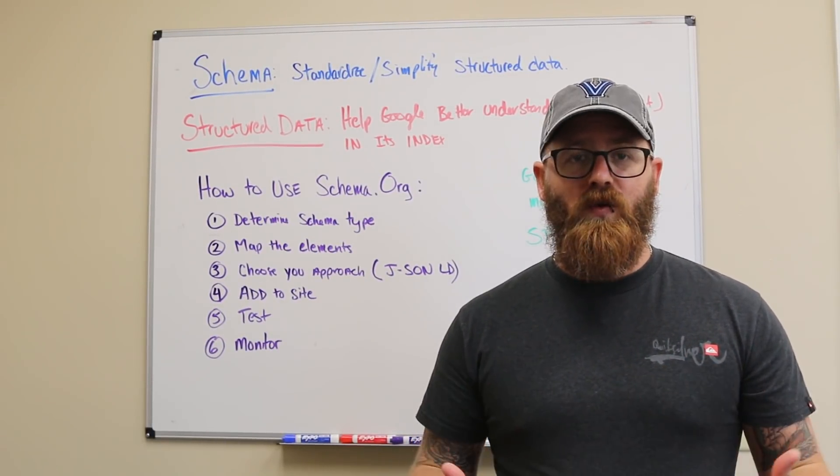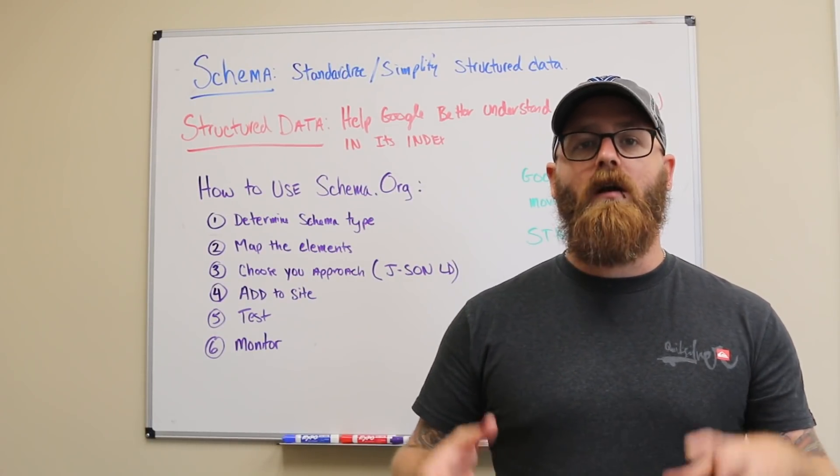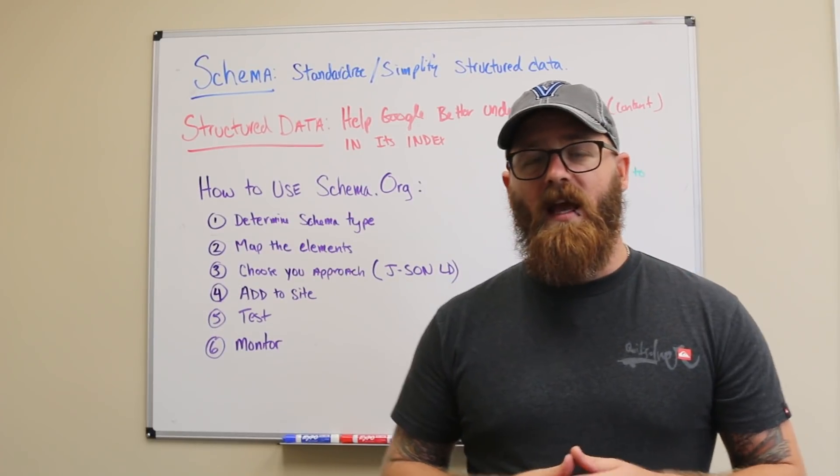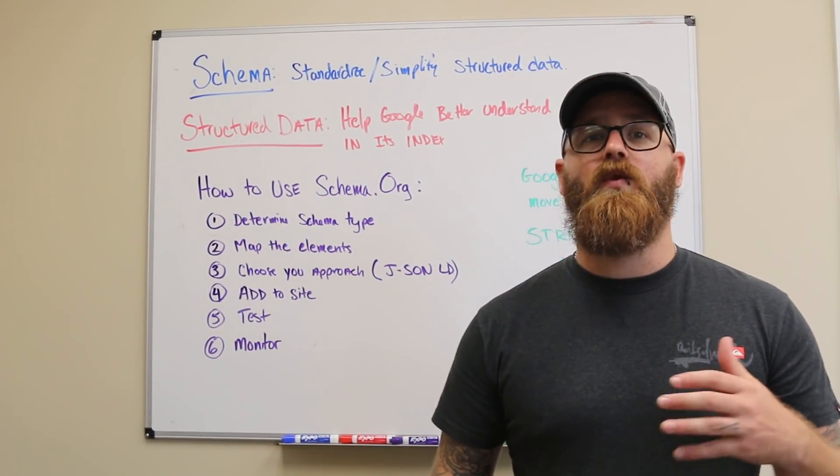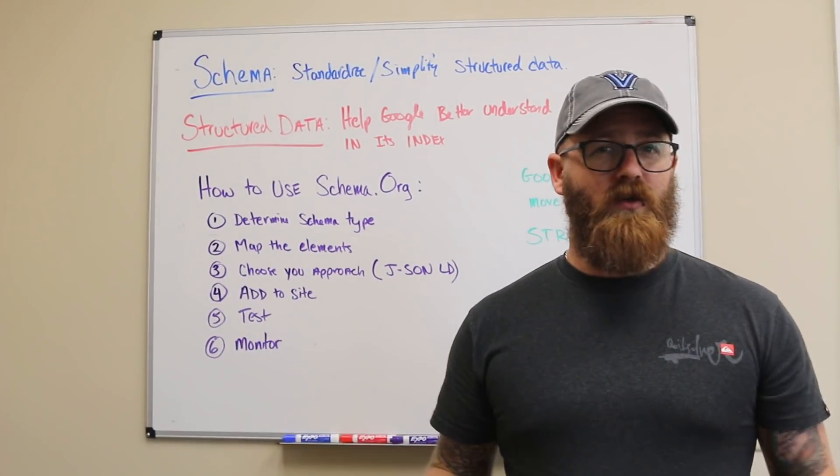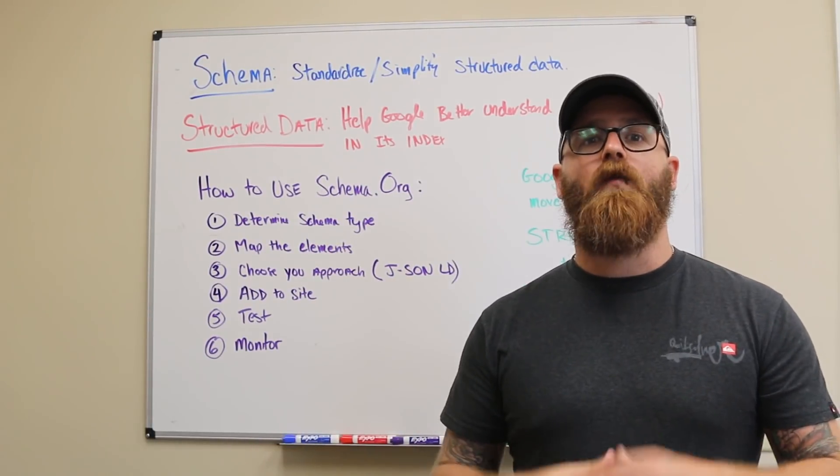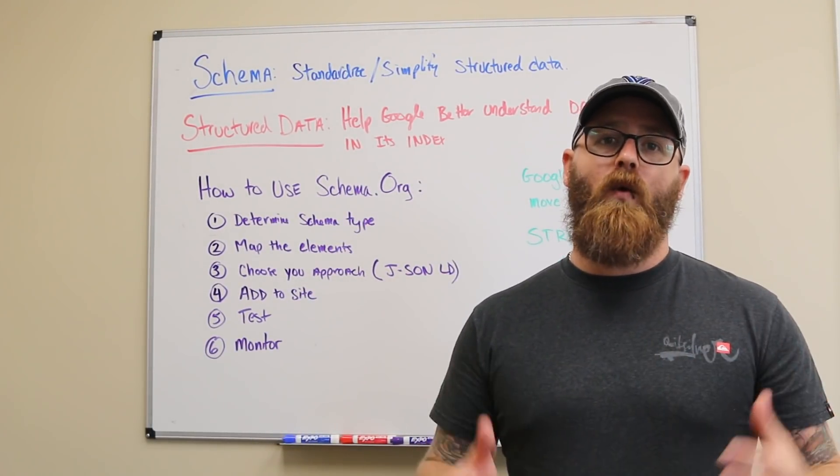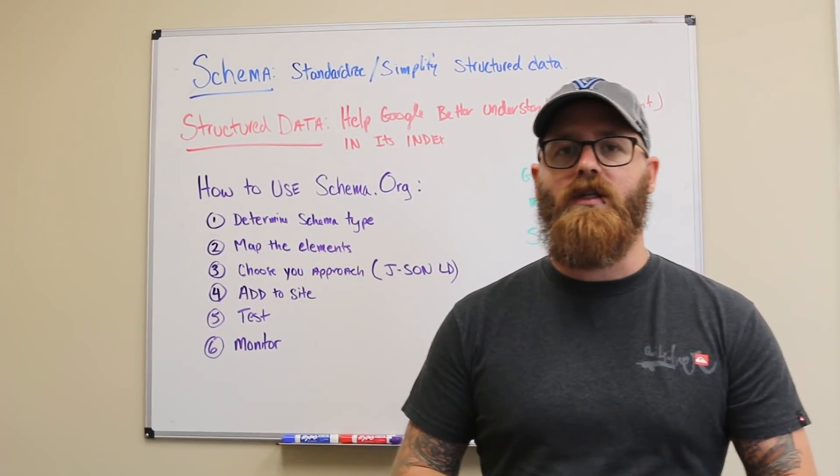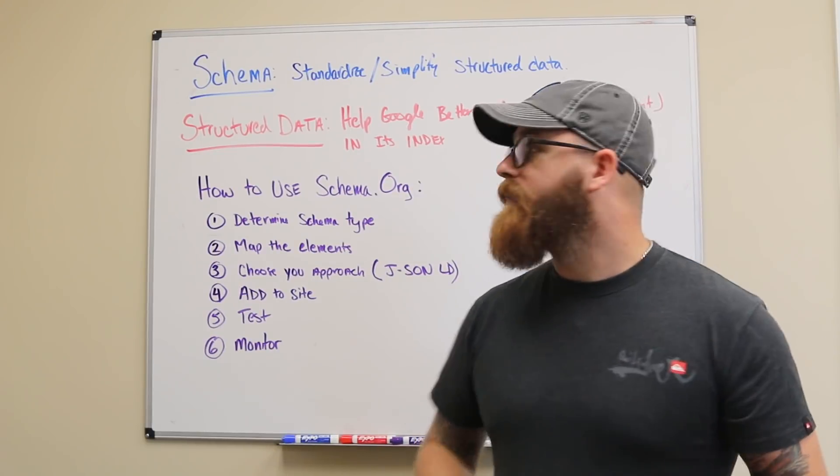Now, in order to do this, they need data, and they need the data that actually helps them better understand content on a website, different elements on a website. And one way that we can do that is through the use of structured data. Now, if everybody just had their own structured data, it wouldn't be really helpful to Google and the other search engines. We need to have a standardized way of really structuring data and marking up our websites, kind of like HTML or CSS, like these different types of coding languages. And so that's how schema.org was birthed.